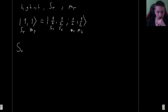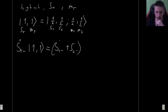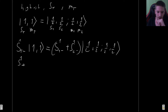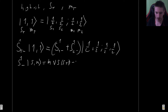We apply S_total minus to the state |1, 1⟩. This is the same as the lowering operator of particle one plus the lowering operator of particle two, acting on |1/2, 1/2; 1/2, 1/2⟩. Remember: a lowering operator acting on |s, m⟩ gives ℏ times the square root of s(s+1) minus m(m-1), acting on |s, m-1⟩.